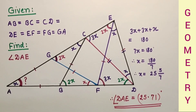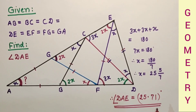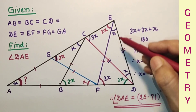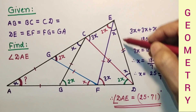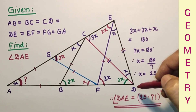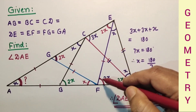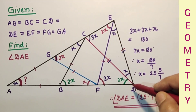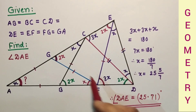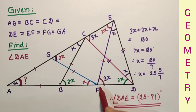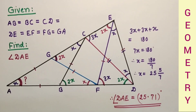One more thing, which is not related to the solution: this angle is 3X and this angle is 3X, subtended by chord DE. DE is subtending 3X here and 3X there. This means points D, F, C, and E are concyclic — they form a cyclic quadrilateral. And here is the answer. Thank you.